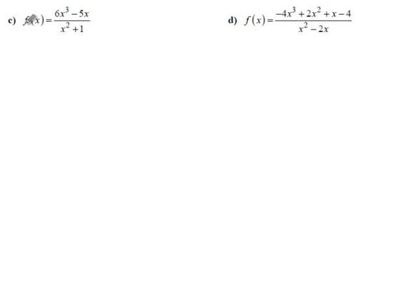Okay, a couple more oblique asymptotes. If we are skillful enough, 6x cubed minus 5x is our dividend, divisor is x squared plus 1.